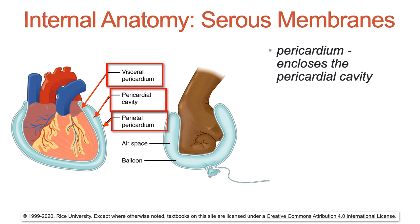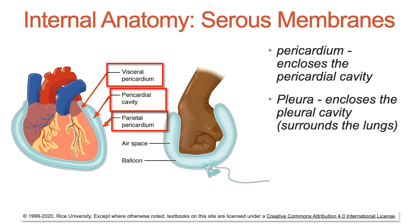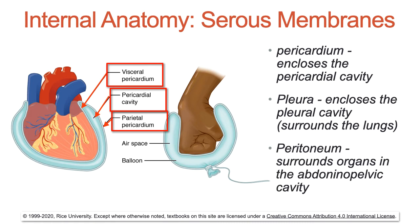There are three serous cavities in the body with associated membranes. The pericardium encloses the pericardial cavity and surrounds the heart. The pleura is the serous membrane that encloses the pleural cavity, which surrounds the lungs. Finally, the peritoneum is the membrane that surrounds organs in the abdominopelvic cavity.